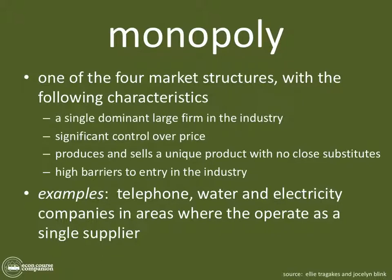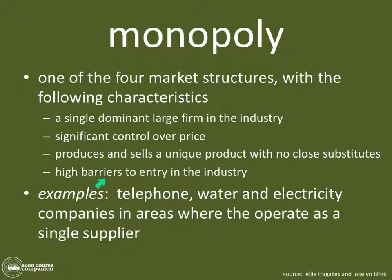Monopoly is one of four market structures with the following characteristics: there is a single dominant large firm in the industry, that firm has significant control over price, that firm produces and sells a unique product with no close substitutes, and there are high barriers to entry in the industry. High barriers to entry means that it's very difficult to start up a business in that industry.